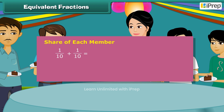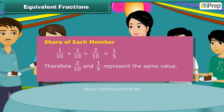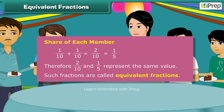That is equal to 2 by 10 of the cake, which is the same as 1 by 5 of the cake. Therefore, 2 by 10 and 1 by 5 represent the same value. Such fractions are called Equivalent Fractions.